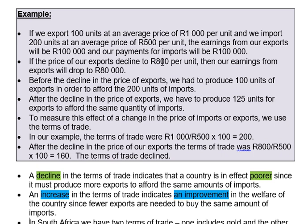After our export price decreases to 800 rand, we calculate the Terms of Trade as 800 ÷ 500 × 100 = 160. So the Terms of Trade decreased from 200 to 160 — the Terms of Trade declined, or in other words, it has deteriorated.